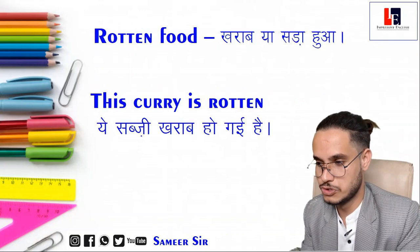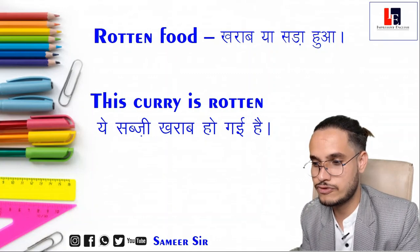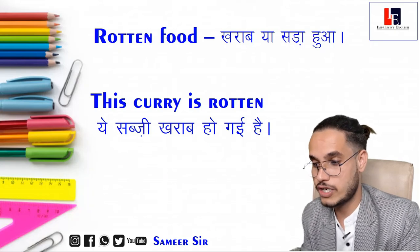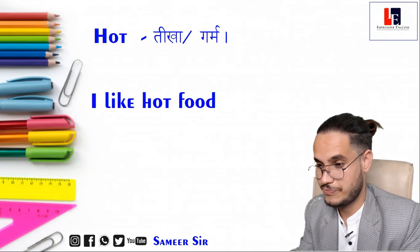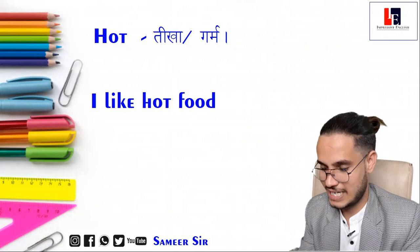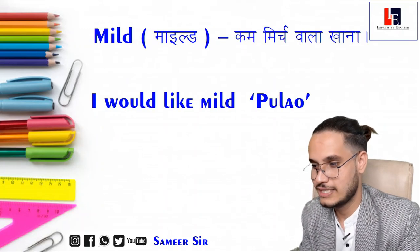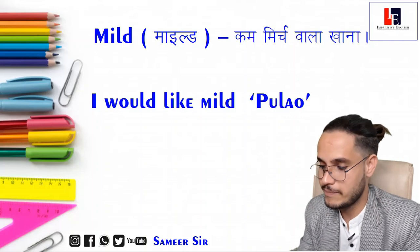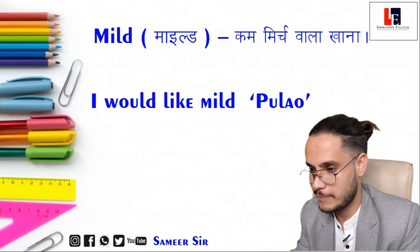Next is rotten food — the food which can no longer be eaten by us. For example: This curry is rotten, I can't eat it. Hot means the food which is spicy. For example: I like hot food. Mild means the food which is not spicy. For example: I will like mild pulao — there should not be much chili.